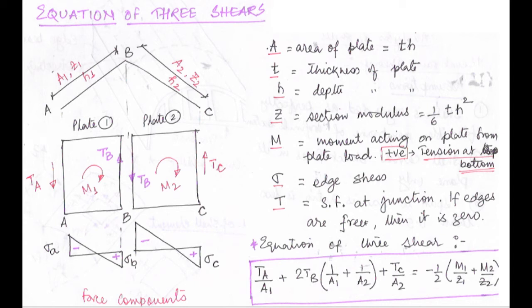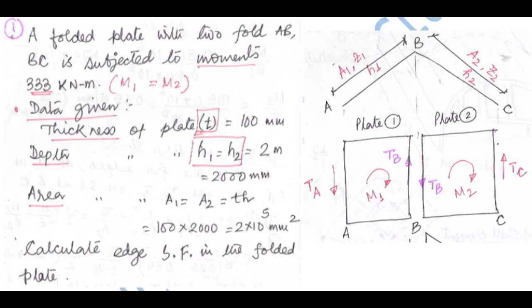Let us look at question one. A folded plate with two folds AB and BC is subjected to moments of 333 kN·m. Data given: thickness of plate = 100 mm, depth of plate = 2 m. Area: A1 = A2 = T × H = 100 × 2000 = 2 × 10⁵ mm². We have to calculate the edge shear forces in the folded plate.